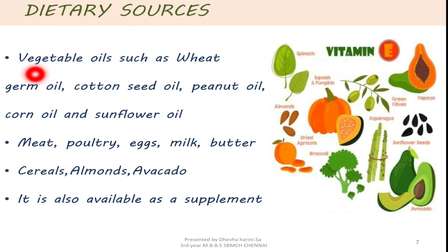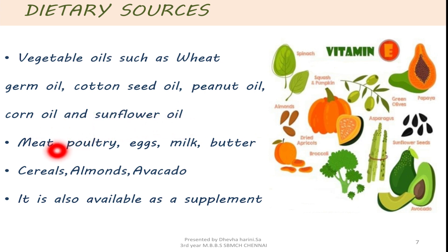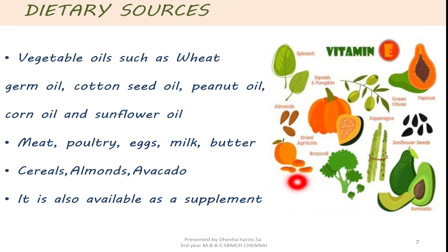Dietary sources: the rich sources of vitamin E are vegetable oils such as wheat germ oil, cottonseed oil, peanut oil, corn oil and sunflower oil, along with some foods like meat, poultry, eggs, milk and butter. It is also available as a supplement. Vitamin E is an important vitamin required for the proper function of many organs, and as it is an antioxidant, it helps to slow down the processes which damage cells.